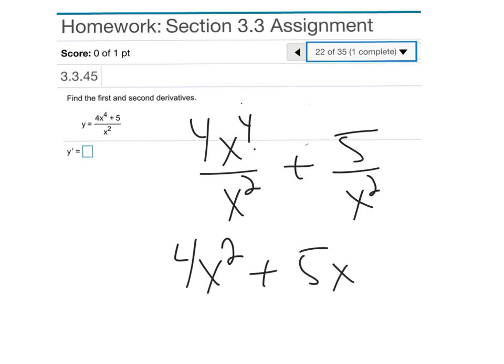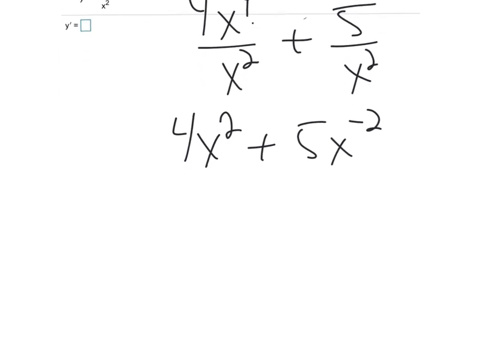What does that do for me? Well, now I can just use the power rule. So that's going to become 8x - 10x^-3. Remember, bring the two down in front, multiply by what's there, take away one more. That's the first derivative.